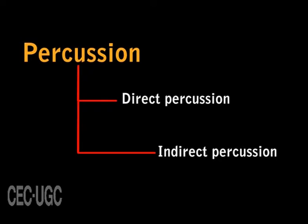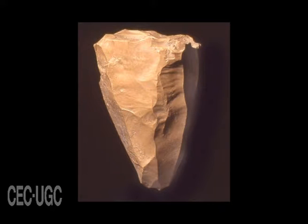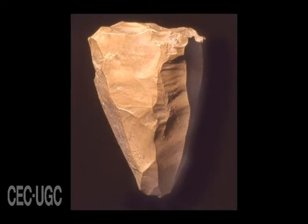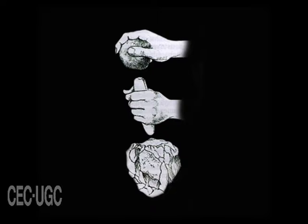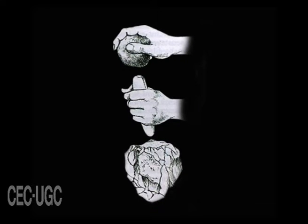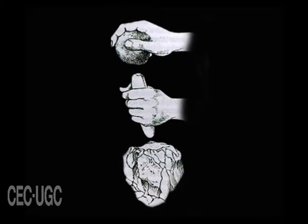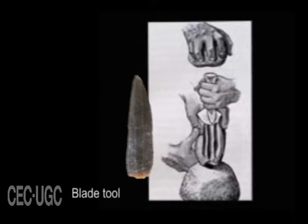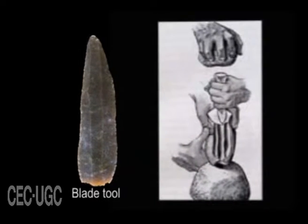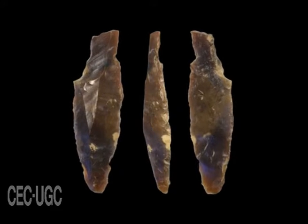Indirect percussion is one of the methods of obtaining a blade used by prehistoric man. In this case, the prepared cylindrical core is not struck directly by the hammer but through a punch. The pointed end of the punch is fixed on the striking platform of the core and then the hammer strikes the other end of the punch. This results in the removal of a thin blade that exhibits numerous closely placed prominent ripples on the main flake surface.